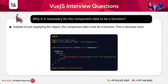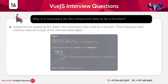The next question is: why is it necessary for component data to be a function? Instead of supplying just an object, component data must be a function. This is because each instance requires its own copy of the returned data object; otherwise, data changes in one component instance will affect the data in all other instances.